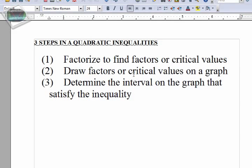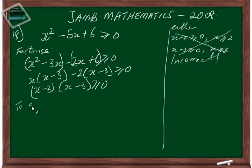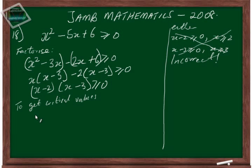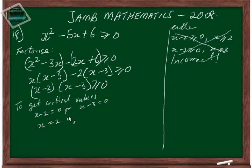That is what makes us undergo the second step: draw the critical values on the graph. To get the critical values, we equate the factors to zero, so x minus two equals zero or x minus three equals zero, giving us x equals two or x equals three.